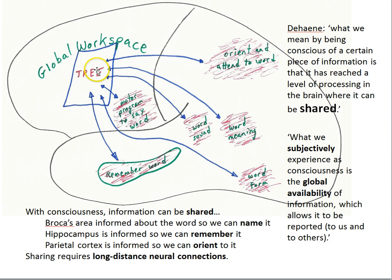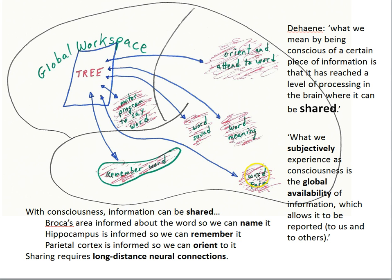Another quote: 'What we subjectively experience as consciousness is the global availability of information, which allows it to be reported to us and to others.' For example, the word 'tree' is in our working memory, so now we can activate the sound of the word 'tree' and the motor program to say it. We can access the meaning of the word 'tree,' try to remember it, or maintain the image of 'tree' in visual imagery. The global workspace idea is the suggestion that once a stimulus enters into this system, it is capable of being shared — other systems have access to it, and information in the global workspace is available for other brain systems to do further processing.